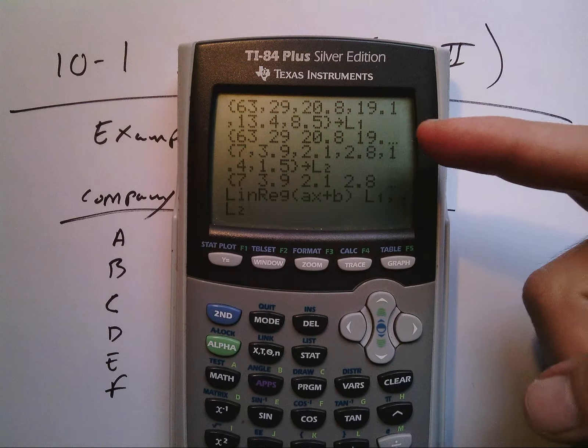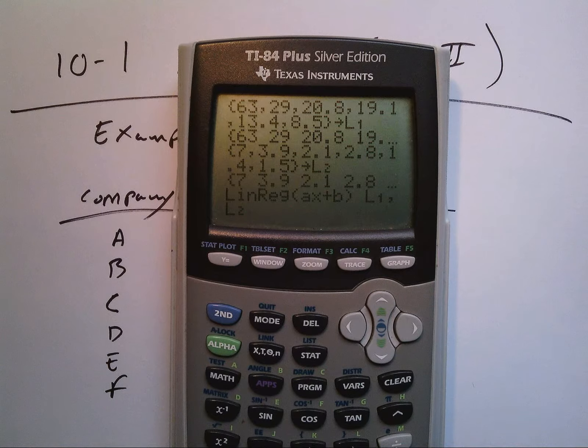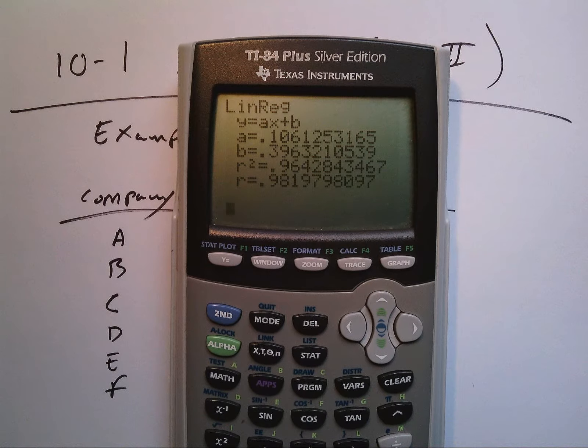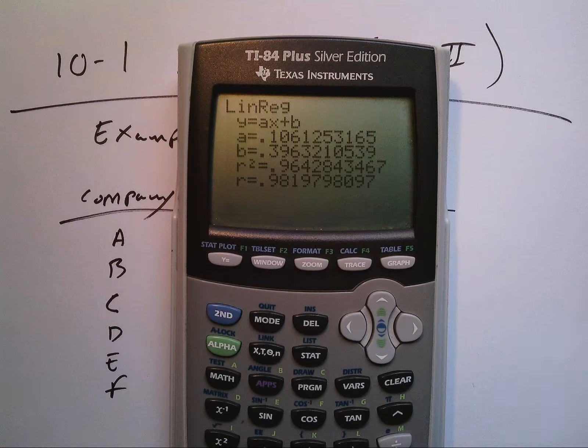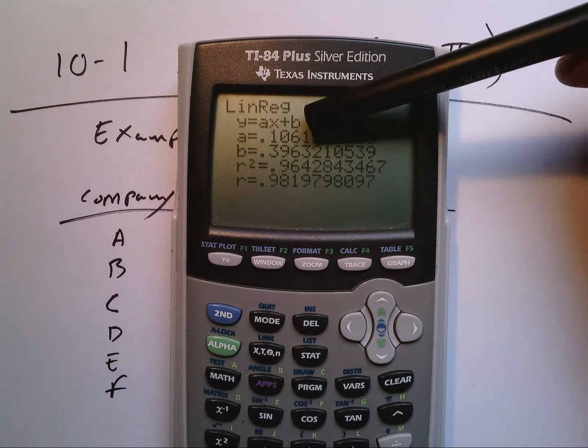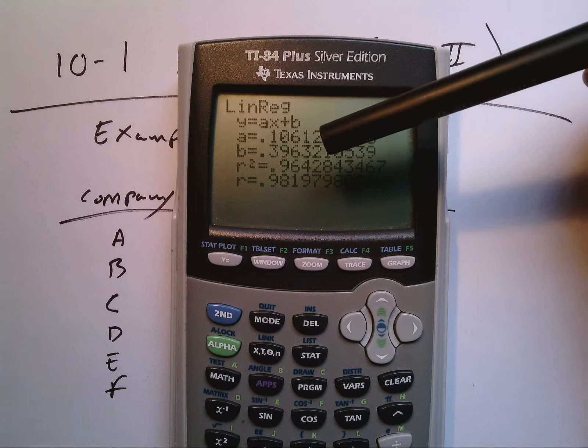Hit enter, and now it spits out a whole bunch of information. It gives me the equation y equals ax plus b—think mx plus b—so the slope of that is 0.106.